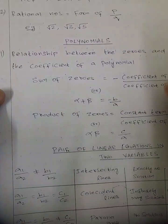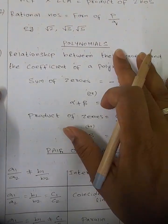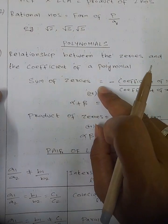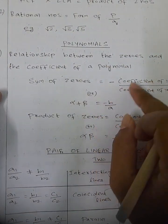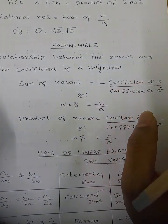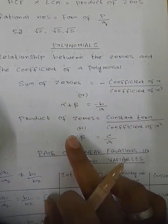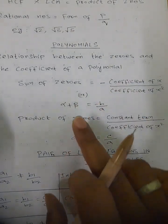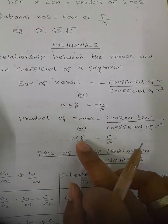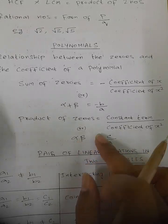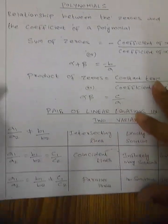Next, polynomials. The key concepts are sum of zeros and product of zeros. Sum of zeros: alpha plus beta is equal to minus b by a, that is, minus coefficient of x divided by coefficient of x square. Product of zeros: alpha times beta is equal to c by a, that is, constant term divided by coefficient of x square.